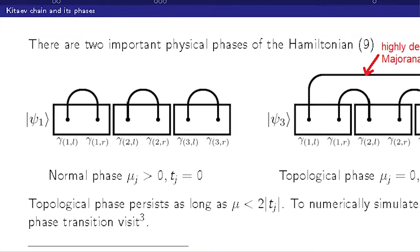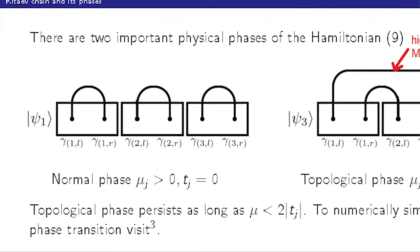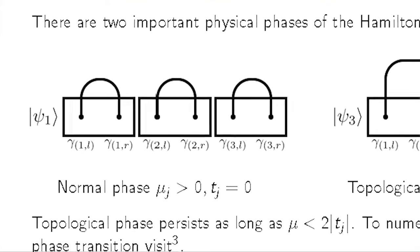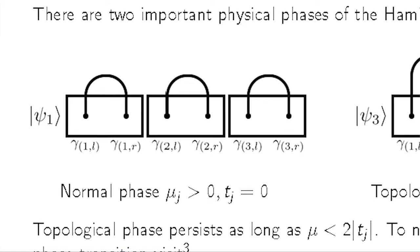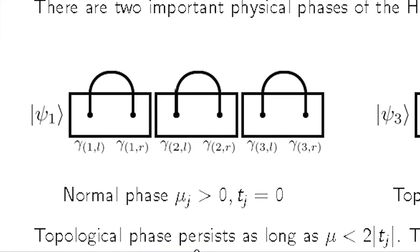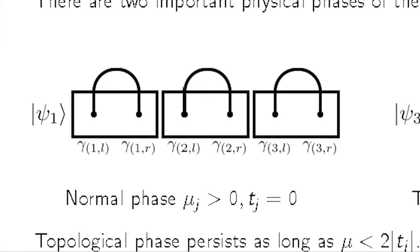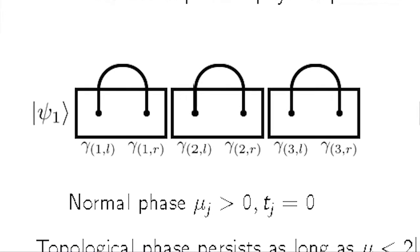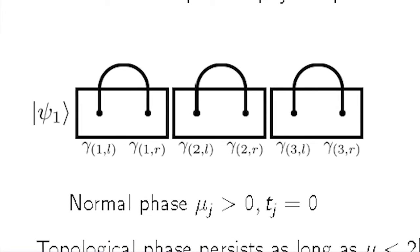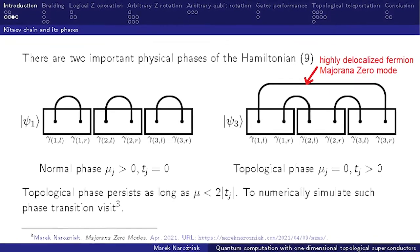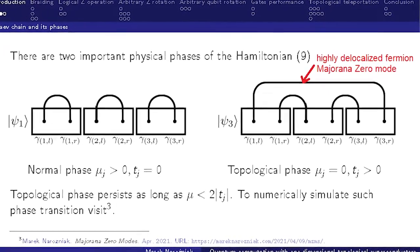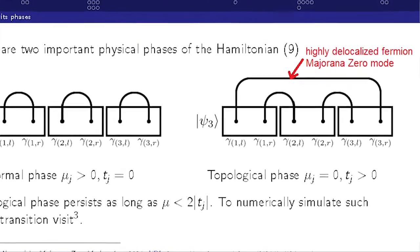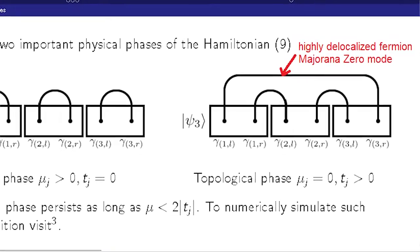And this model has two important physical phases. One of them is the normal phase, which is what you would intuitively expect to occur. Every fermion is just paired on the same site and occupies only one site. This is the normal phase, but there also exists a topological phase in which fermions are sort of shifted by half-site, in which fermions are delocalized in between neighboring sites.